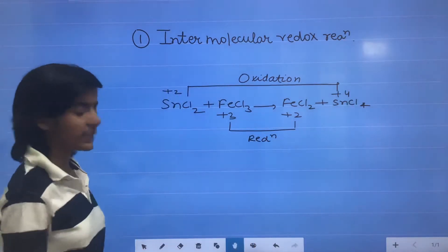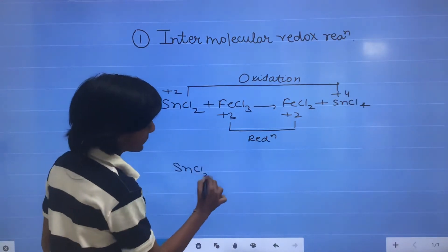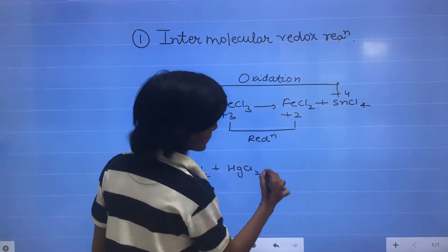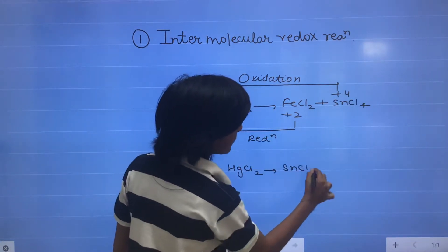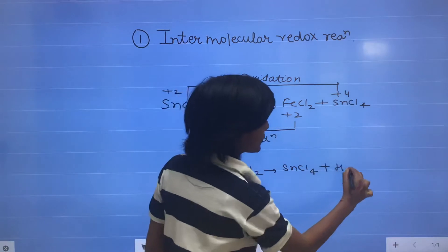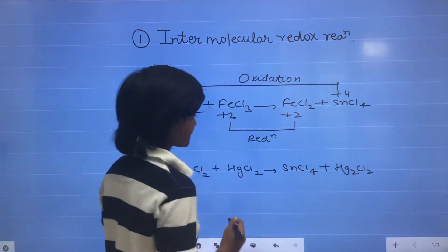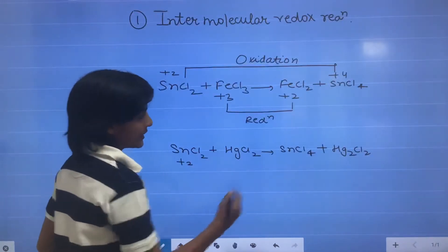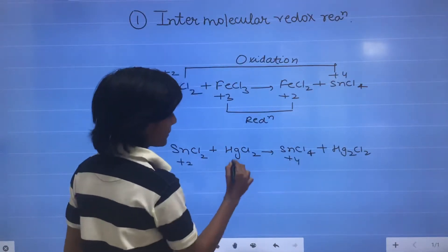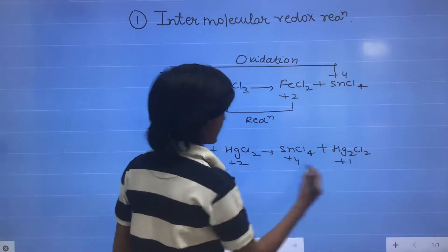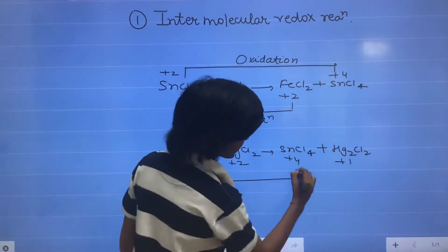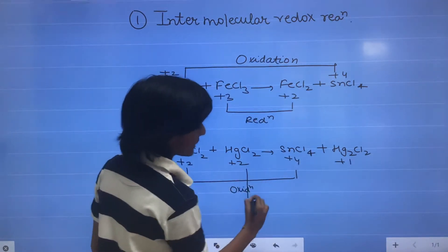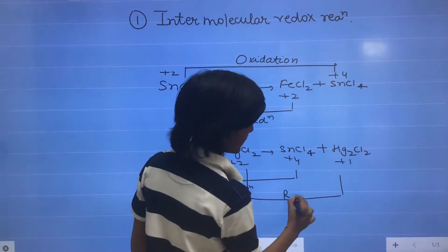Another example: when SnCl2 reacts with mercuric chloride HgCl2, this forms SnCl4 plus Hg2Cl2 (mercurous). So the oxidation state of Sn is plus 2 and here it is plus 4, and of Hg it is plus 2 and here it is plus 1. So it is an increase in oxidation state — oxidation — and a decrease in oxidation state — reduction.